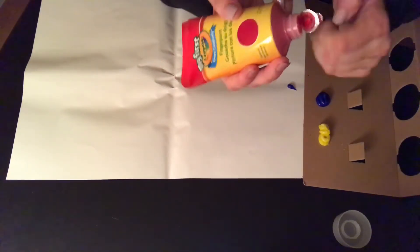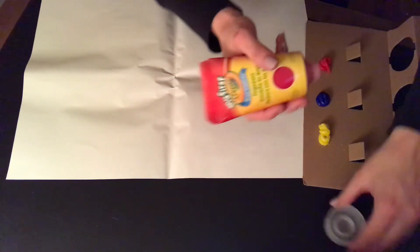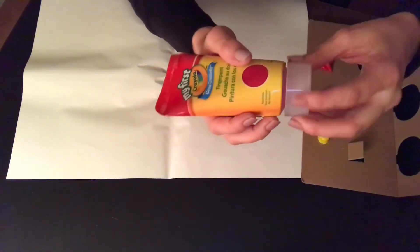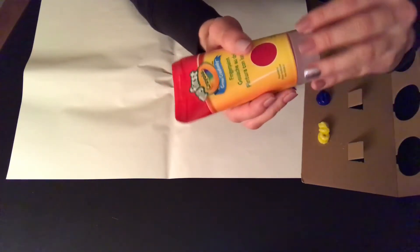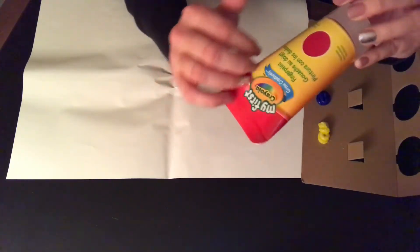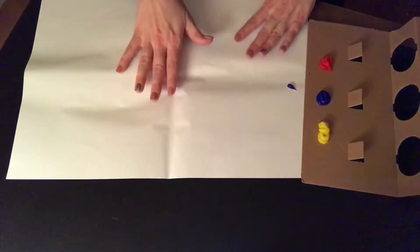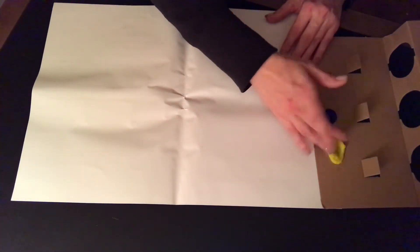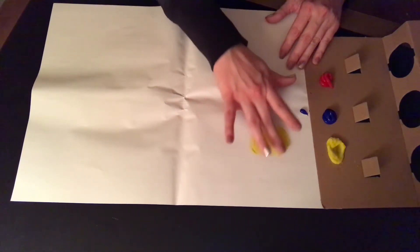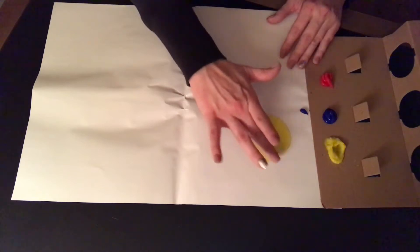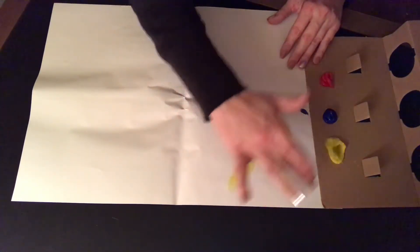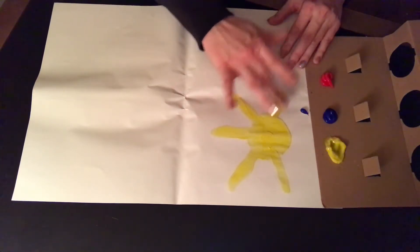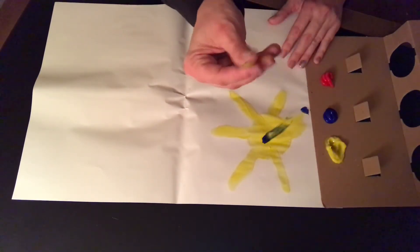All right. Okay, now to the fun part, I'm applying some paint. I'm going to start by making a yellow sun. I am definitely no artist, but that's not the point with this. It's just to feel the paint on your hands. It feels good.